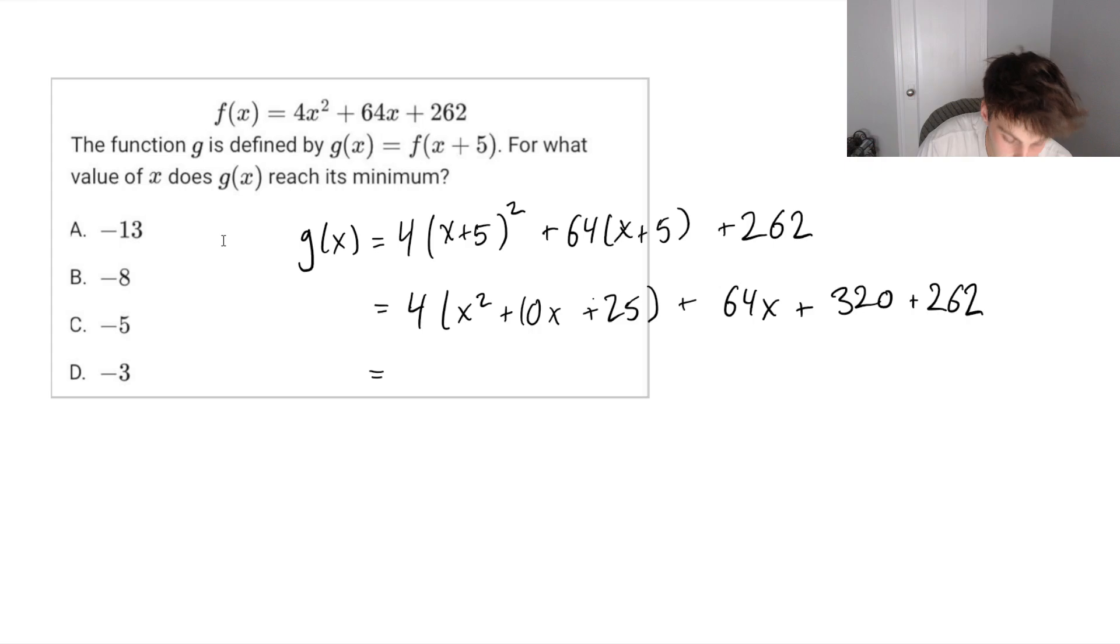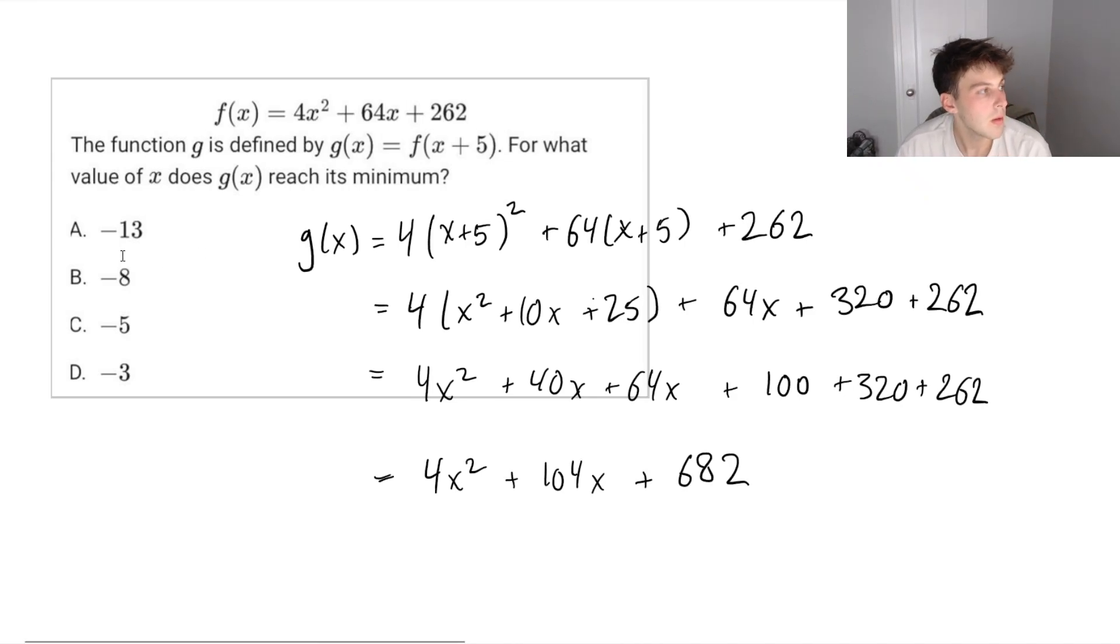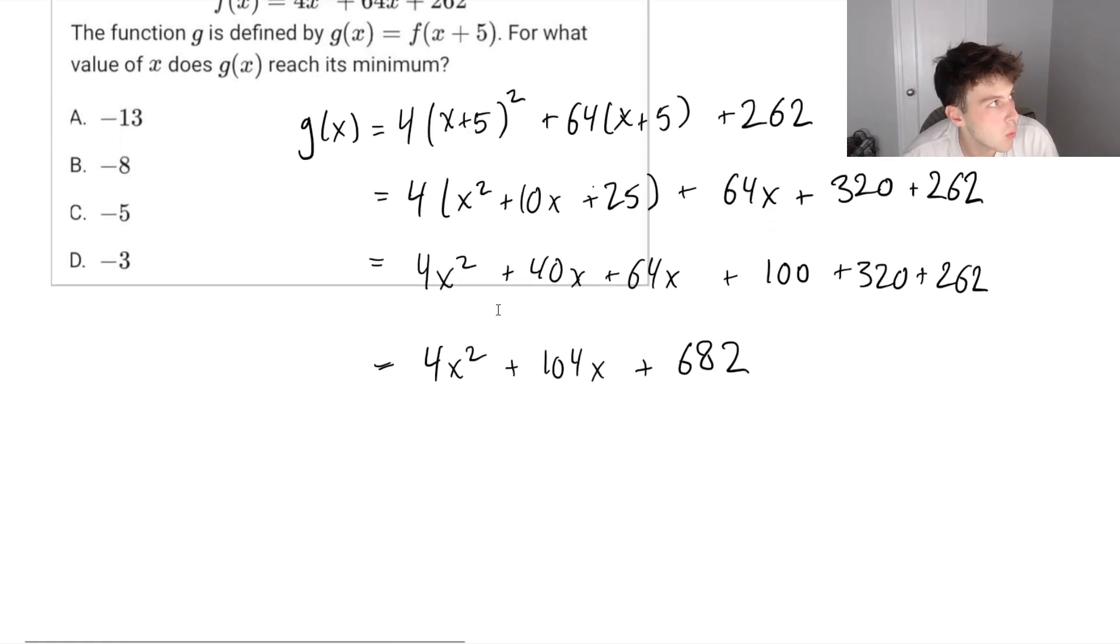So this is going to be x squared plus 10x plus 25 plus 64x plus 320 plus 262. We're going to get 4x squared plus 40x plus 64x plus 100 plus 320 plus 262. And finally, we get 4 times x squared plus 64x plus 682. So this is our g of x function.